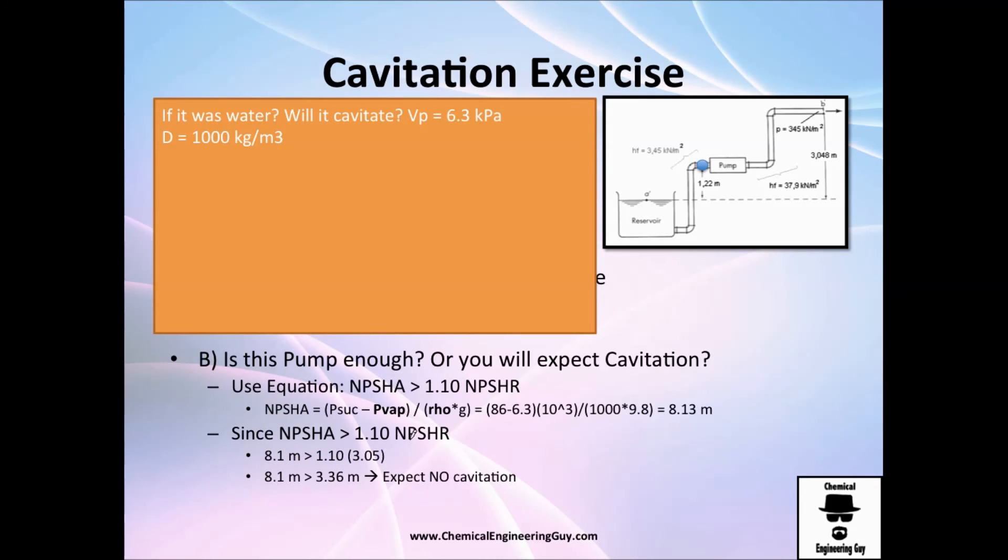Let's do the same exercise for water. Let's suppose we have the vapor pressure right here, 6.3 kilopascals. We got the density. So let's go back and see if this pump is enough. The pressure in the suction line will be the same, 86. The only thing that changes is the vapor pressure and the density of our fluid. Gravity is constant.